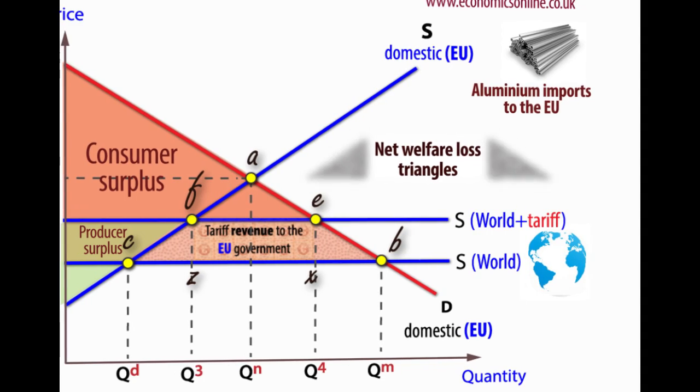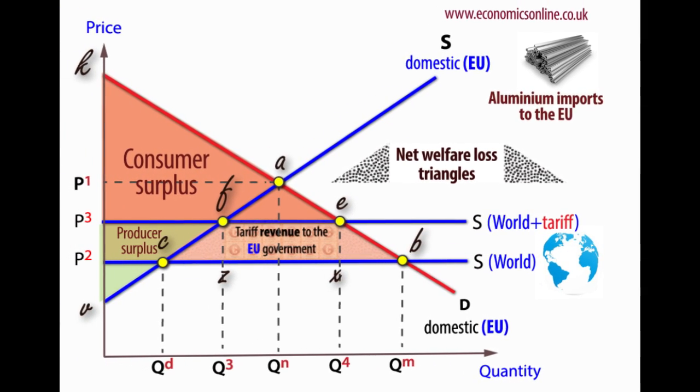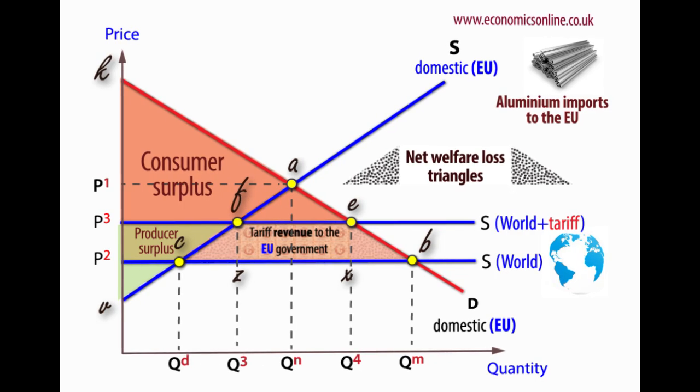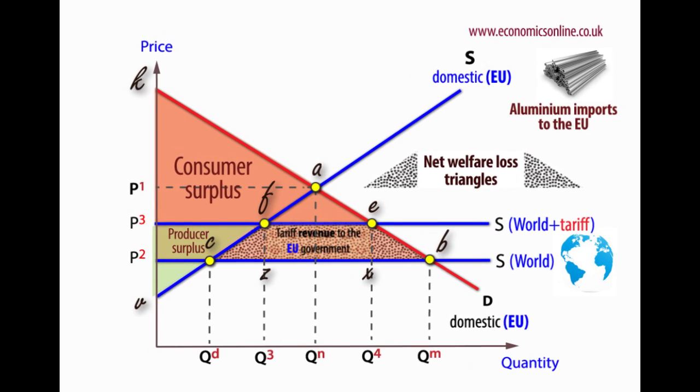However, this is not enough to compensate for the loss of consumer surplus, and the net welfare loss is the sum of the triangles C, F and Z, plus E, B and X.